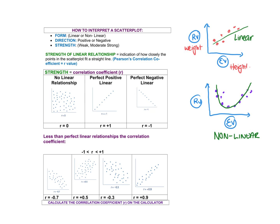Once we've established that it's linear, we talk about direction. The options are positive or negative. Looking at my example, the dots are going upwards — that means it has a positive gradient. Remember when we had that straight line and the B value was the gradient? So this one is a positive graph. If you had a negative one, it would be going downwards.